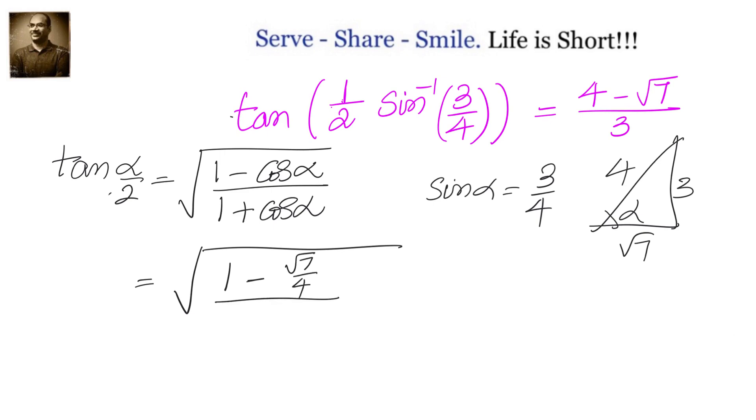Now substitute cos alpha as root seven by four and simplify. The fours in the denominators cancel, leaving the square root of four minus root seven divided by four plus root seven.